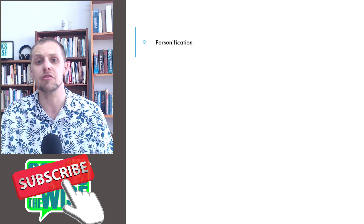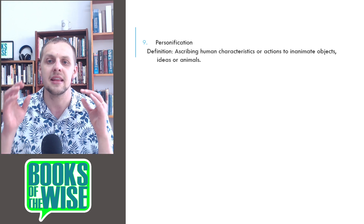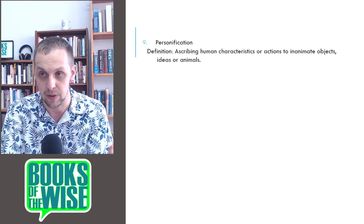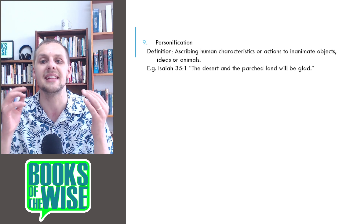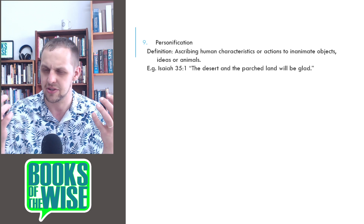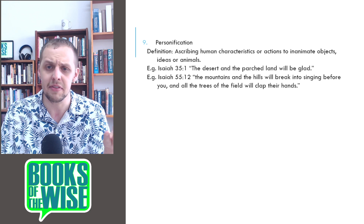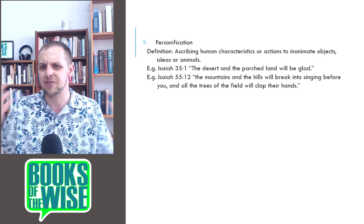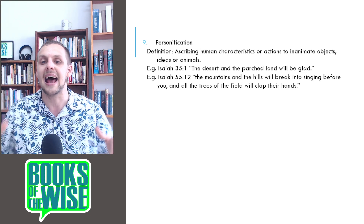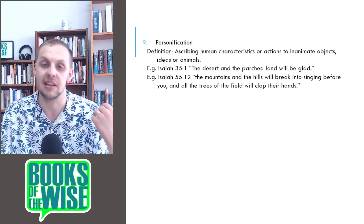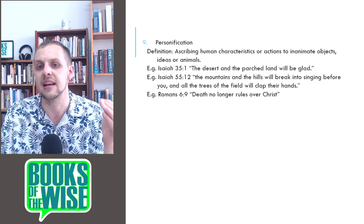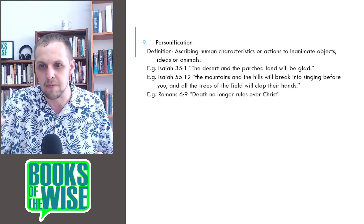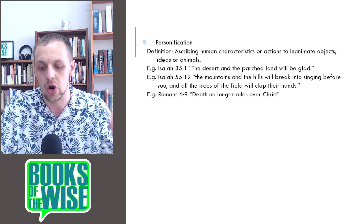The next figure of speech involving substitution is personification: ascribing human characteristics or actions to inanimate objects, ideas, or animals. For example, Isaiah 35:1: the desert and the parched land will be glad. Isaiah 55:12: the mountains and hills will break into singing, and all the trees of the field will clap their hands — mountains singing, trees clapping hands, showing how amazing that will be. Romans 6:9: death no longer rules over Christ — death is personified as if it could rule like a king.